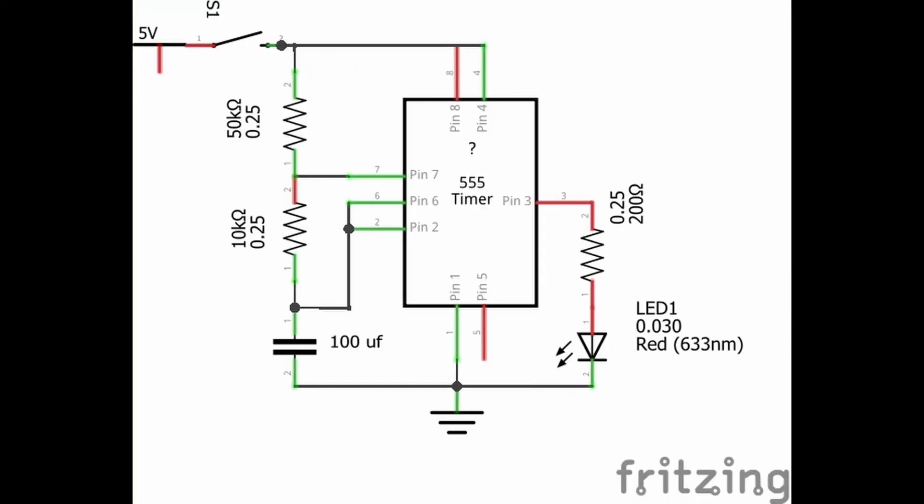The change of state of the 555 now means pin 7 is connected to ground and the capacitor discharges through 10K resistor only, so the LED is off for a shorter time period. Pin 2 goes low again, the cycle repeats itself. Therefore, the on-off times for the LED can be changed by changing the resistance values.